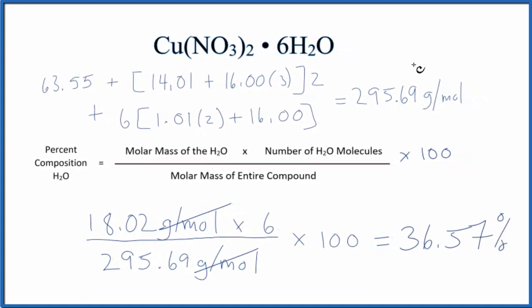What that means is if we have the mass of the entire compound, 36.57% of that mass is going to be the water. That's how you find the percent composition by mass of water in copper 2 nitrate hexahydrate.